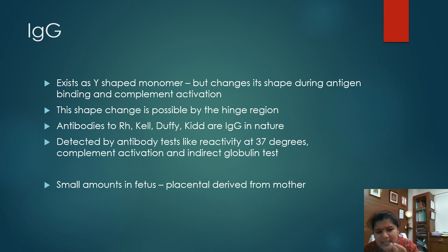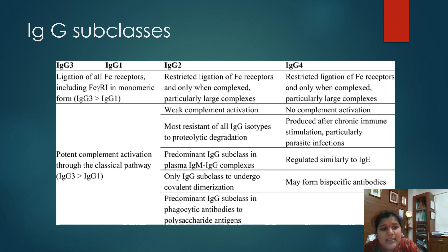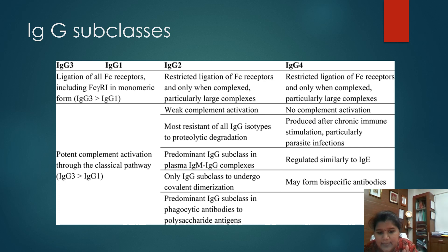Small amounts of IgG are present in the fetus, derived from the mother as we already saw. In case of IgG, there are subclasses: IgG1, 2, 3, and 4. The main points to remember are that IgG1 and IgG3 are very good complement activators — especially IgG3 — and they activate complement using the classical pathway. IgG4 acts in a way very similar to IgE. IgG2 is the subclass that can undergo covalent dimerization — so we remember it as '2 and dimers' — but it is not a very good complement activator like IgG1 or IgG3.